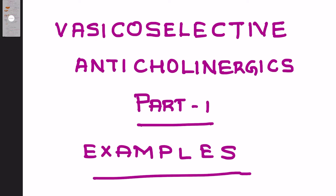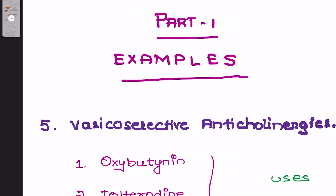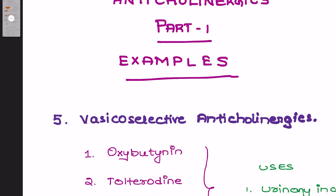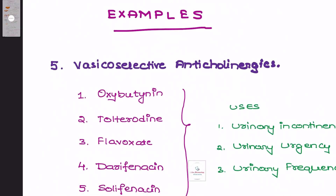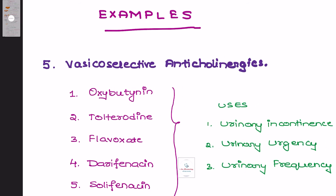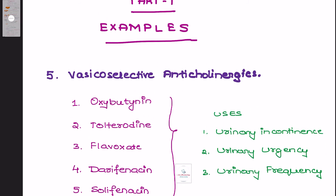Hello dear students, welcome back to my channel I Love Pharmacology. In today's session, let us learn about a very important drug under psychoselective anticholinergics. The examples you need to remember under psychoselective anticholinergics are five psychoselective anticholinergic agents.